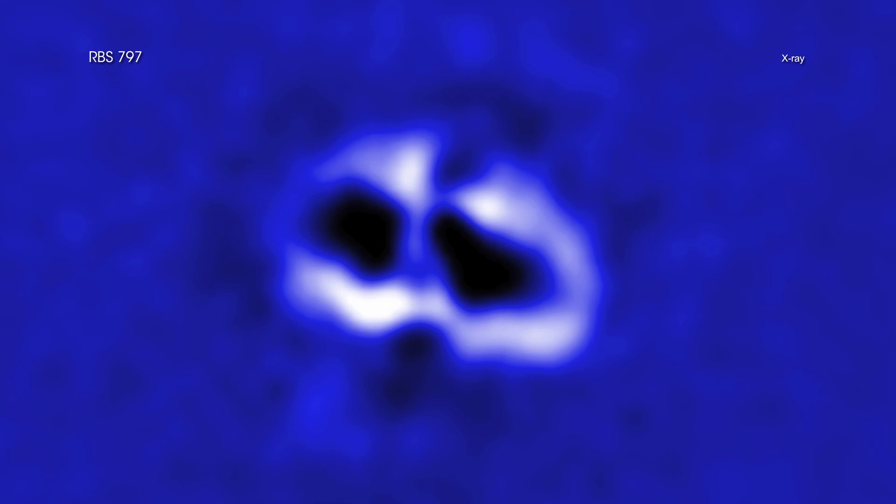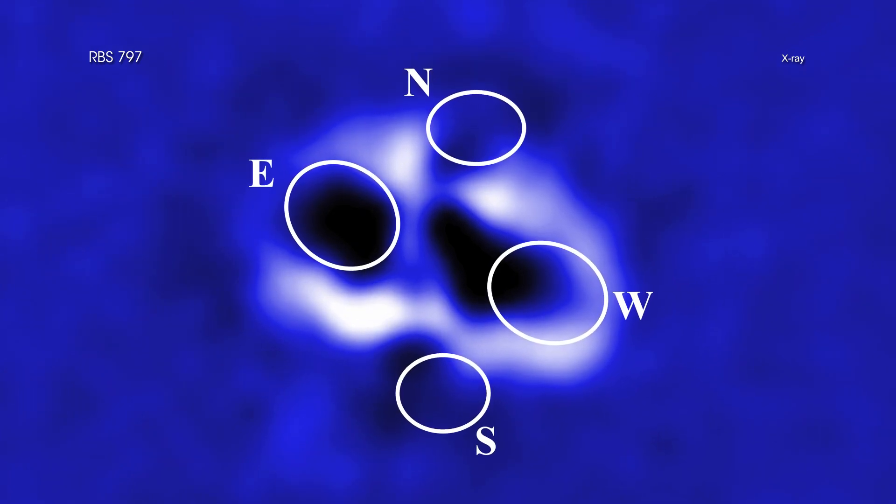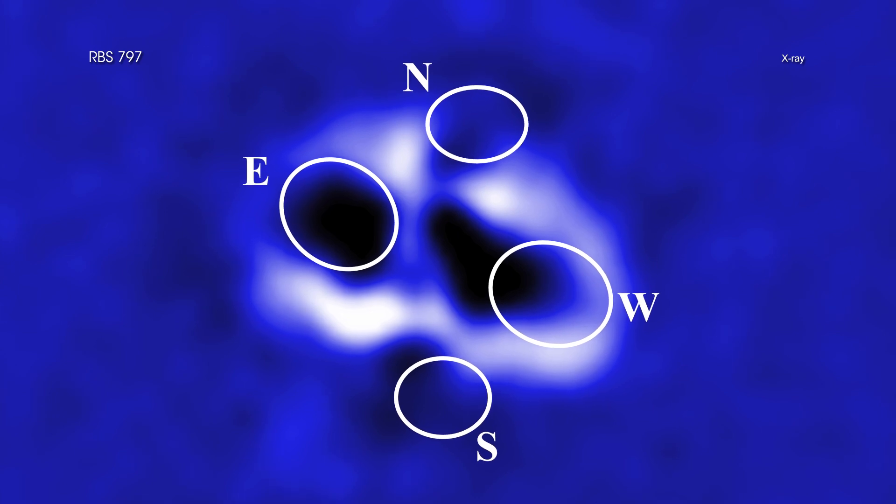A new Chandra study of the galaxy cluster, known as RBS 797, located about 3.9 billion light-years from Earth, uncovered two separate pairs of cavities extending away from the center of the cluster.